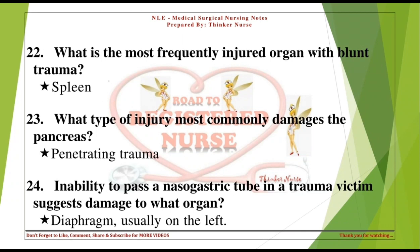What is the most frequently injured organ with blunt trauma? Spleen. What type of injury most commonly damages the pancreas? Penetrating trauma. Inability to pass a nasogastric tube in a trauma victim suggests damage to what organ? The diaphragm, usually on the left.